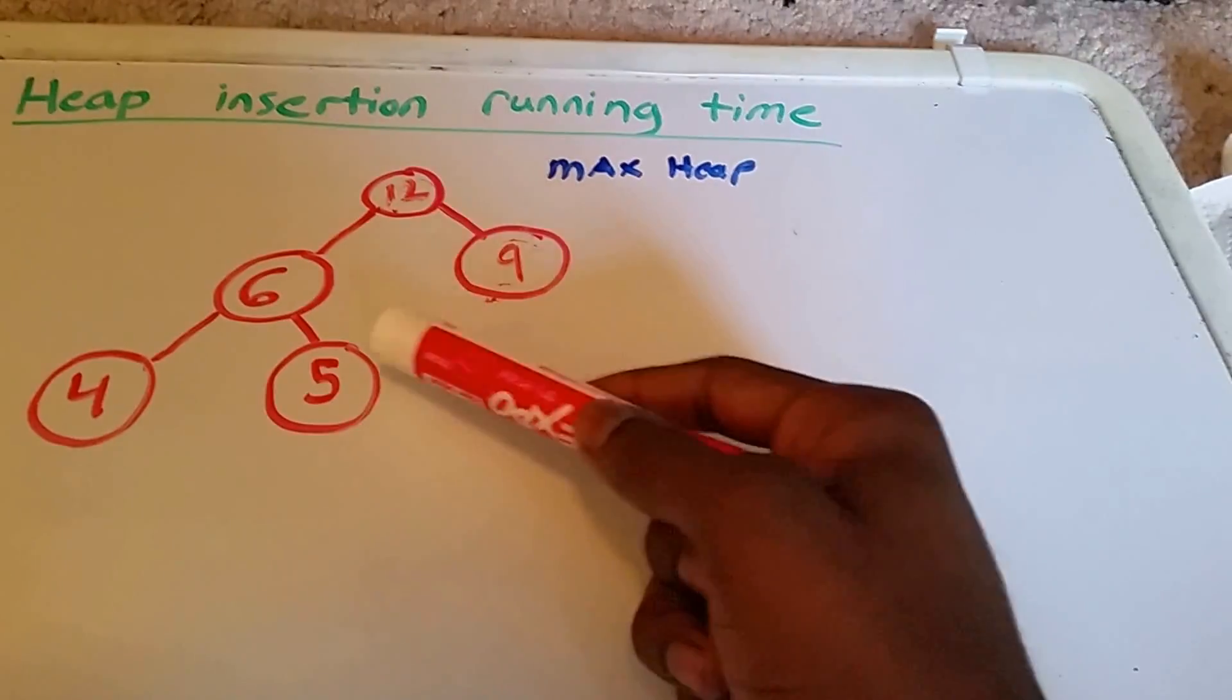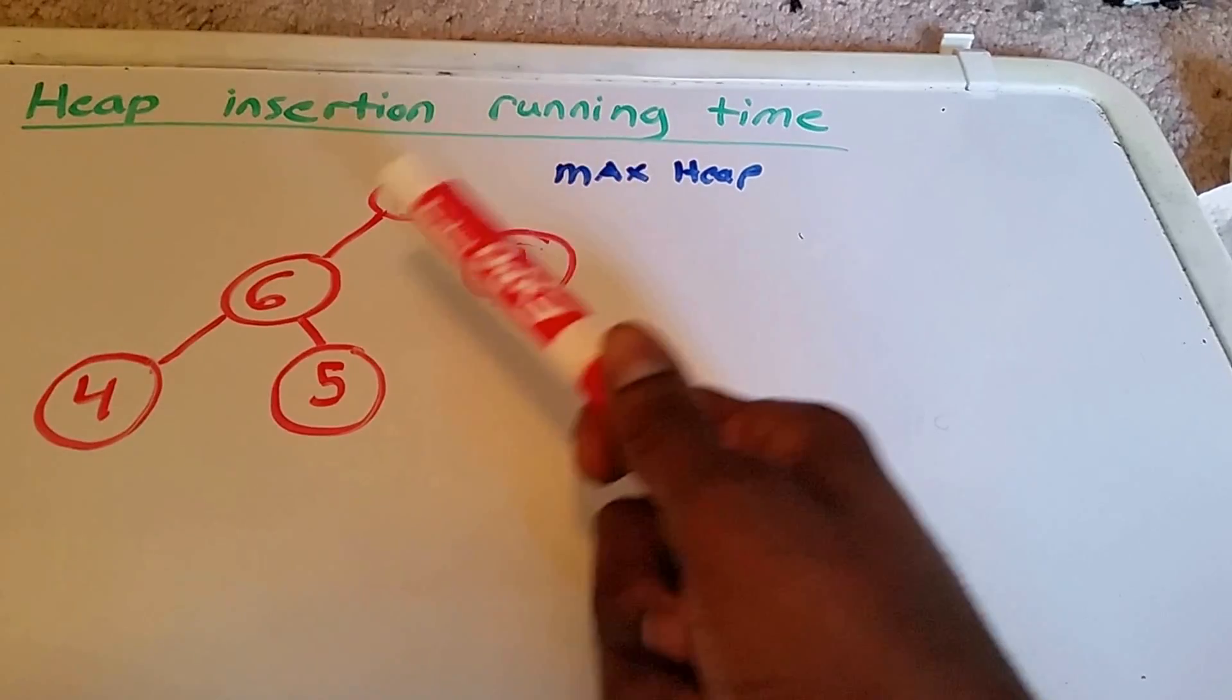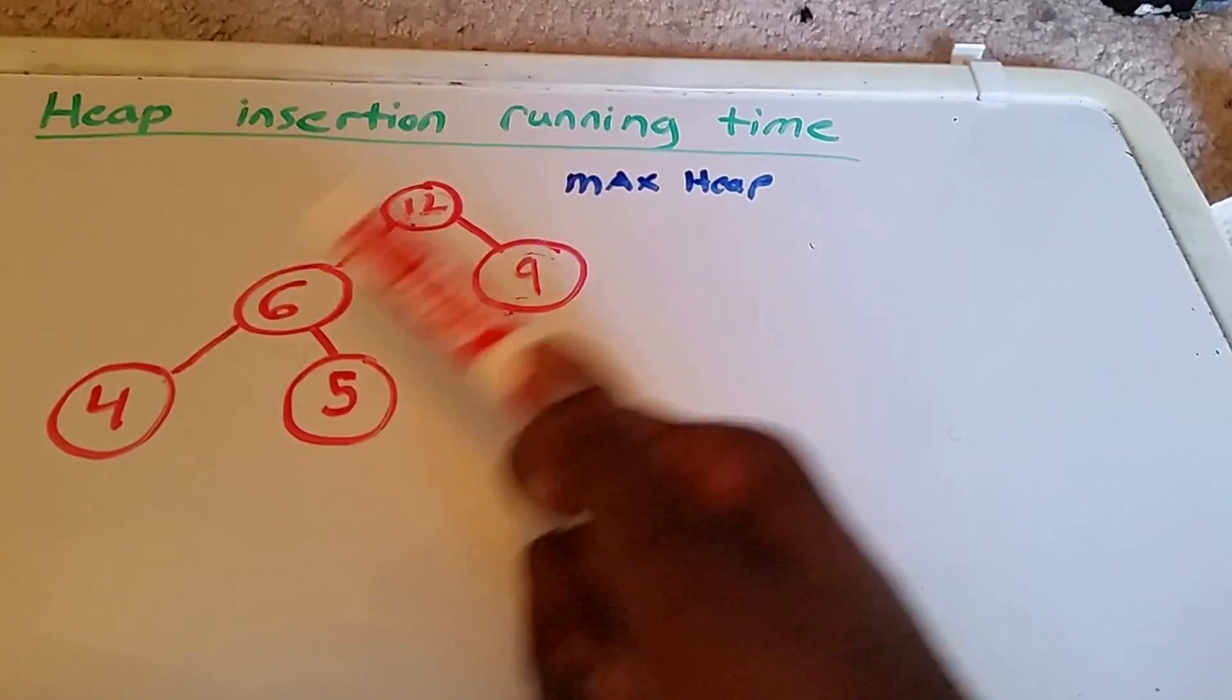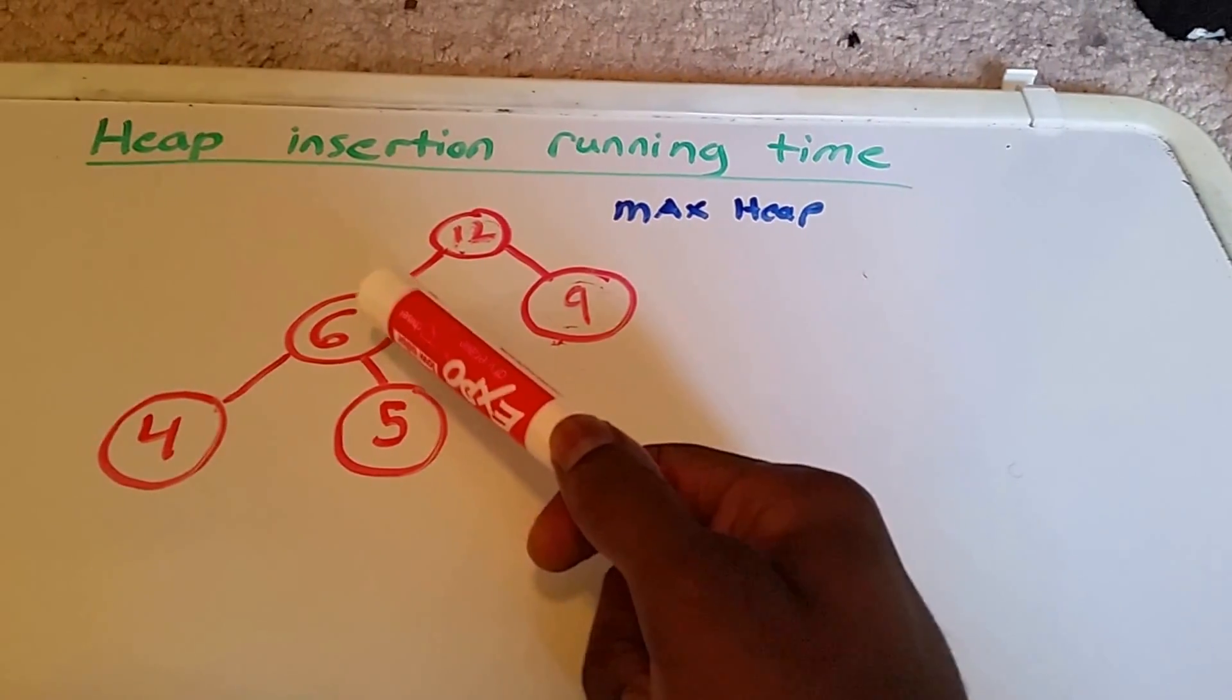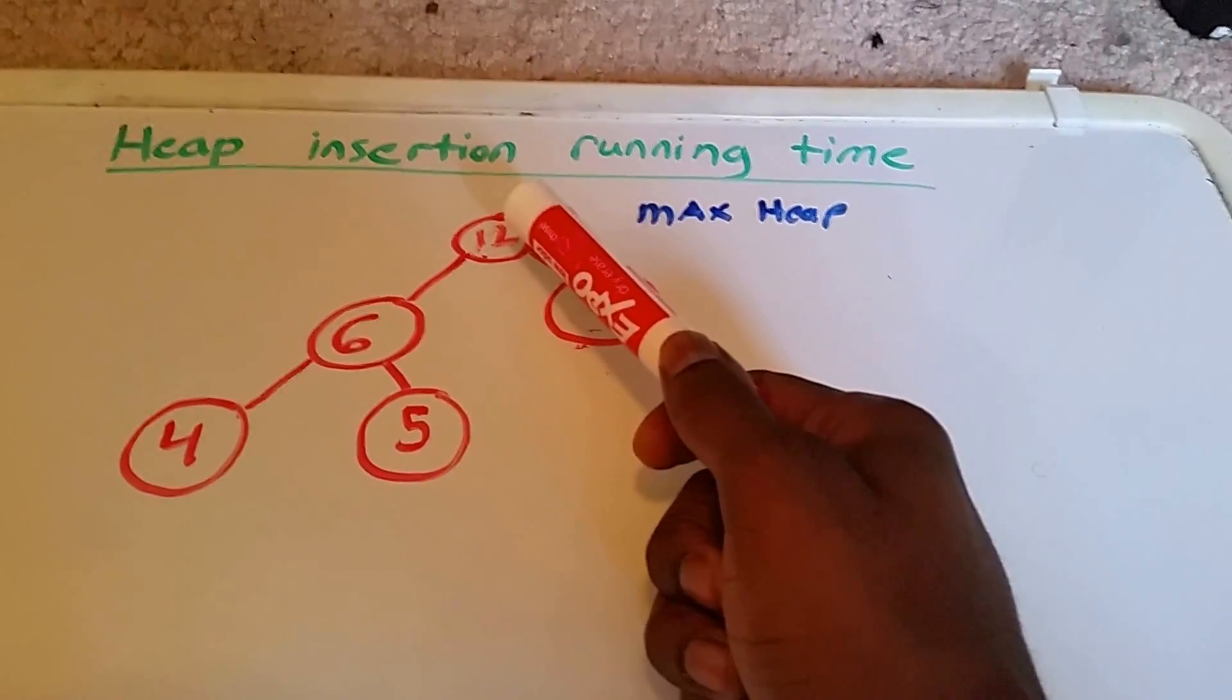So here we have a heap, specifically a max heap. We have to make sure that it follows the max heap properties, that all the children are less than or equal to its parents. So 4 and 5 are both less than or equal to 6, and 6 and 9 are both less than or equal to 12.